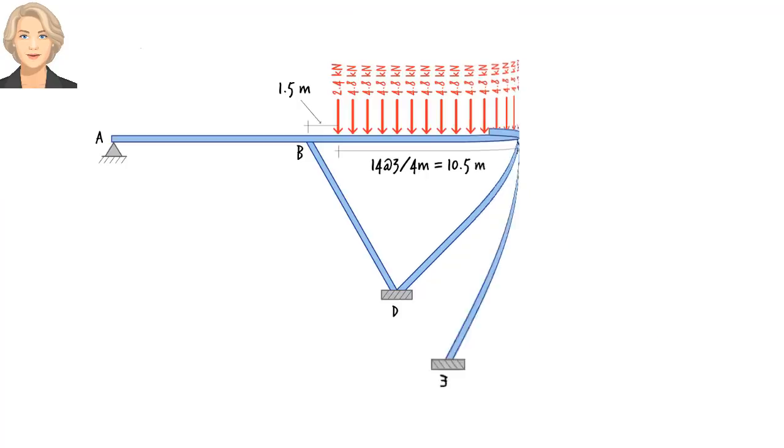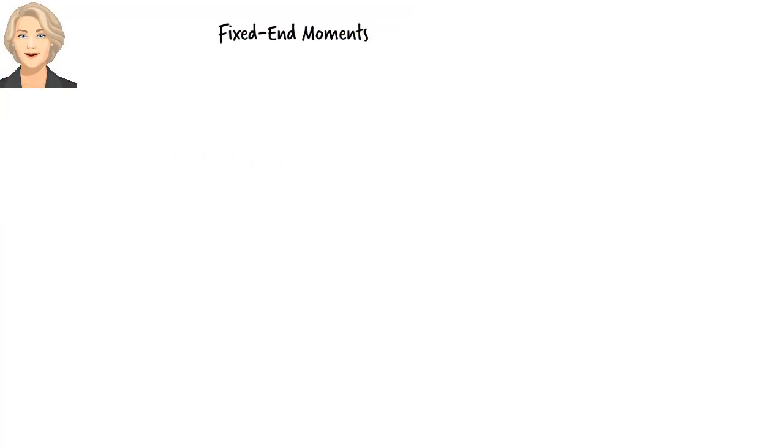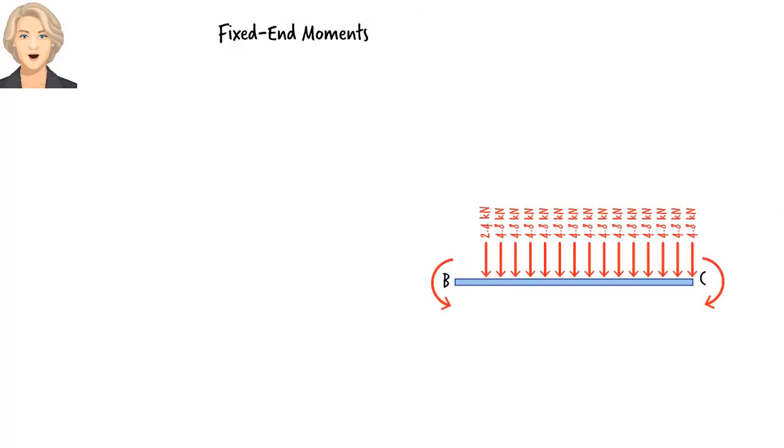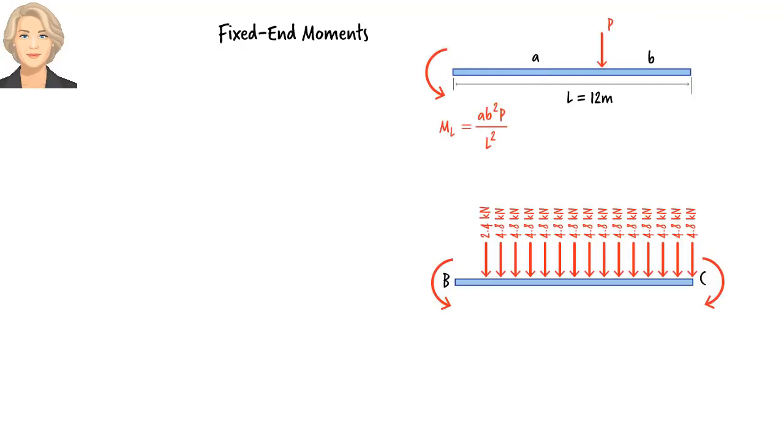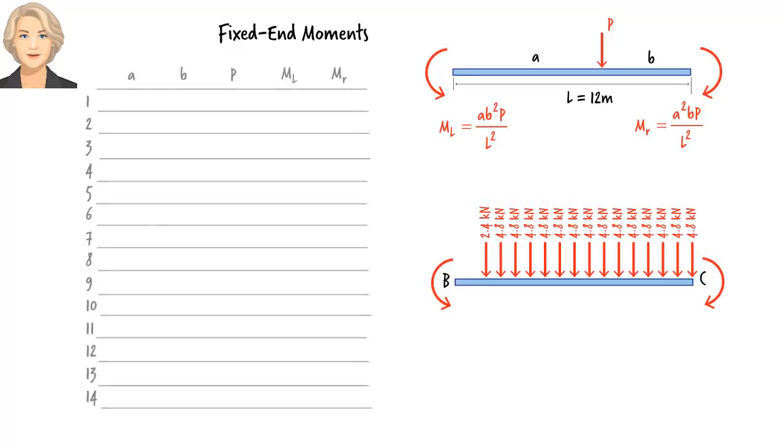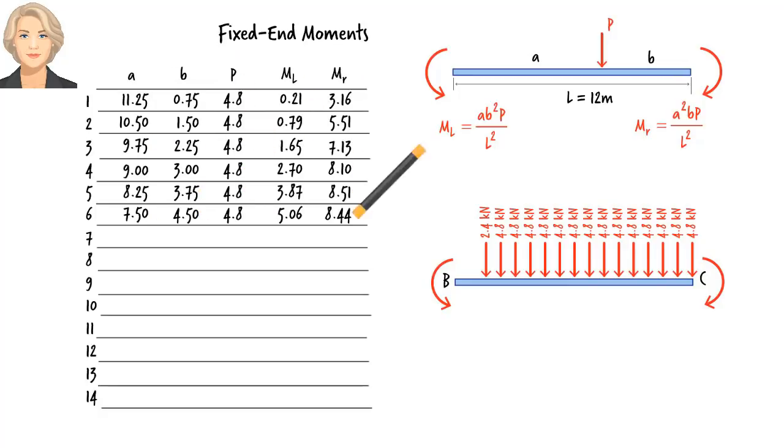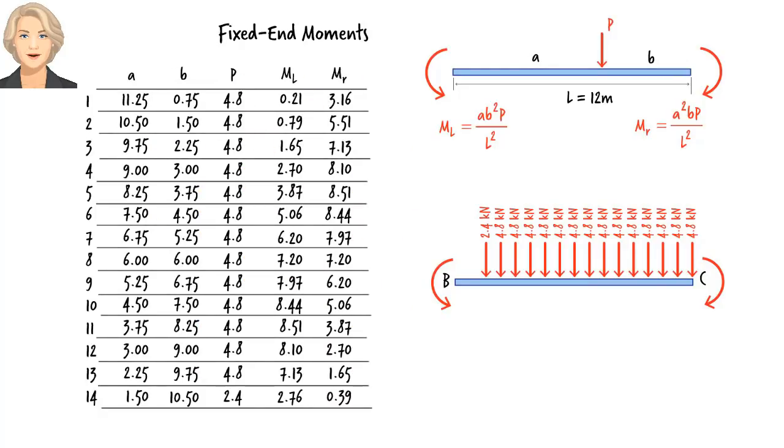Since we are going to use the slope deflection method, let's start by calculating the fixed end moments. Here BC is the only member that has non-zero fixed end moments. Here are the fixed end moments for a typical beam subjected to a concentrated load of P. There are 15 concentrated loads applied to our member. Let's calculate the left and right fixed end moments for each load. Now add up all the values in this column to get the total fixed end moment for the left end of the beam, and add up these values to get the fixed end moment for the right end of the beam.